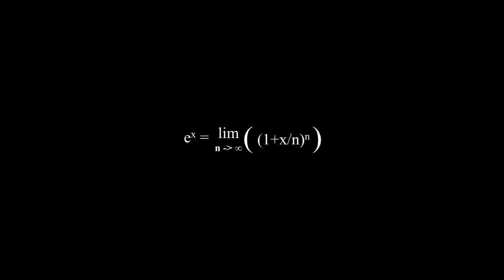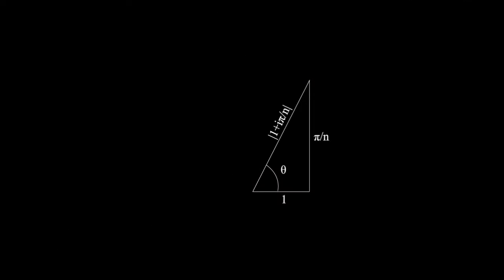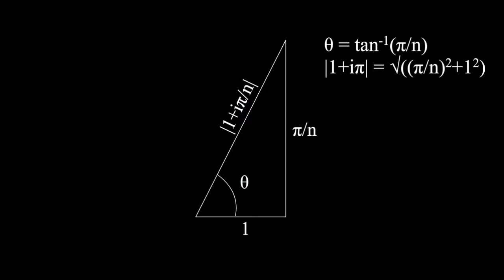Now, using what we had before, and subbing in i pi for x in this equation, we find that e to the i pi is also equal to this expression. The number inside the brackets turn out to be a complex number, which is good because it's something we can understand. By doing some trigonometry, we find that the number's angle is the inverse tan of pi over n, whilst the size of that number is the square root of 1 plus pi over n squared.